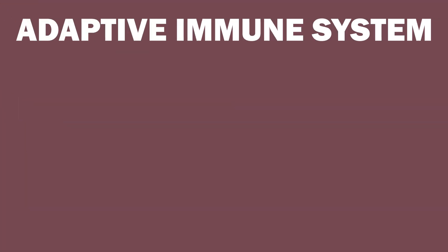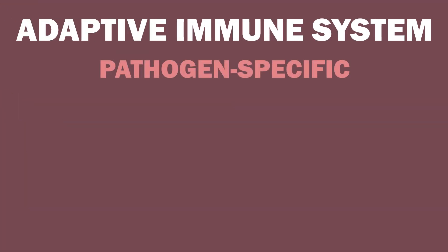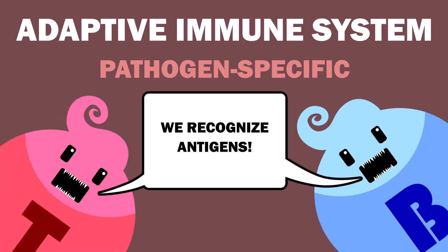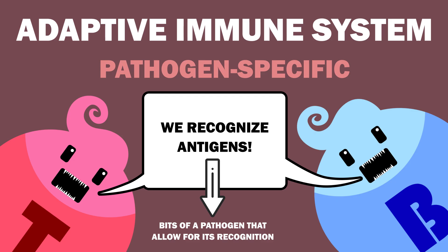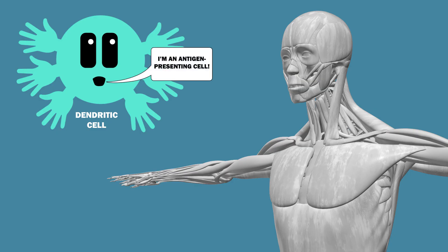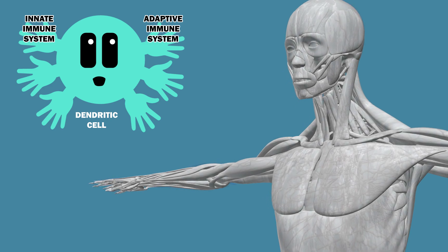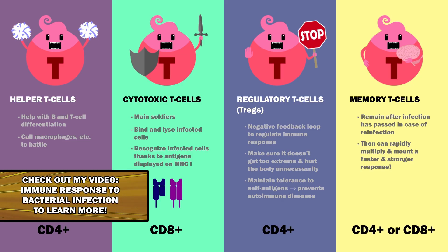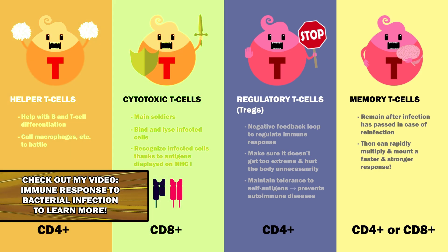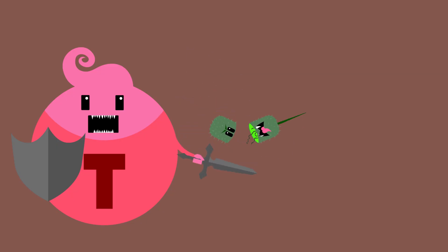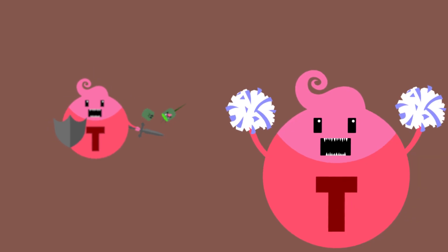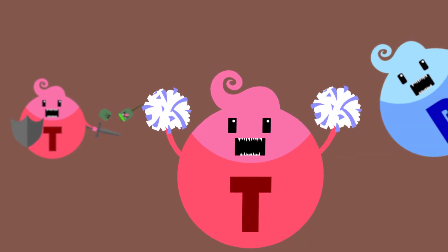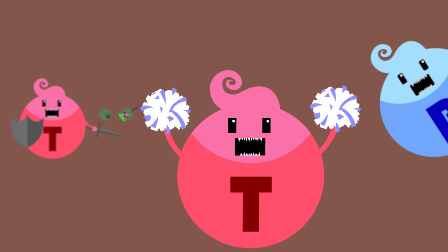Meanwhile, the adaptive immune system brings out pathogen-specific weaponry. This response is thanks to B and T-cells, which recognize antigens — bits of a pathogen that allow for its recognition. When dendritic cells, a type of antigen-presenting cell on the bridge between the innate and adaptive immune systems, enter lymph nodes, B-cells produce antibodies to bind the specific invader, marking it for destruction. There are four kinds of T-cells; the relevant ones here are cytotoxic and helper T-cells. Cytotoxic T-cells bind and lyze the pathogen. Helper T-cells are necessary for the activation of both cytotoxic T-cells and B-cells, so without them, the adaptive immune response can't be activated. Antibodies don't get produced, and infected cells aren't lyzed.